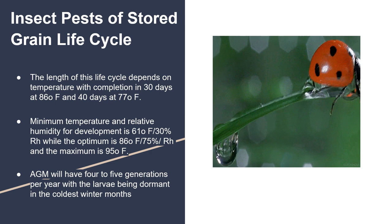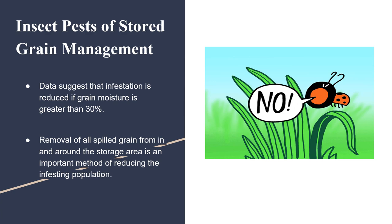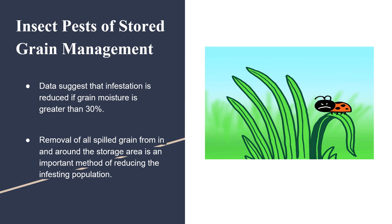Insect Pests of Stored Grain Management. Data suggest that infestation is reduced if grain moisture is greater than 30%. Removal of all spilled grain from in and around the storage area is an important method of reducing the infesting population.